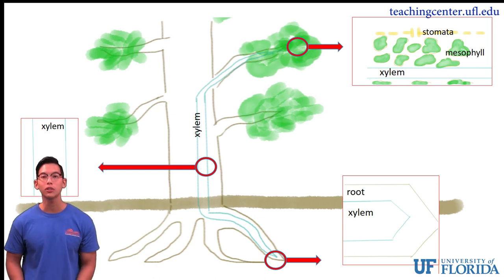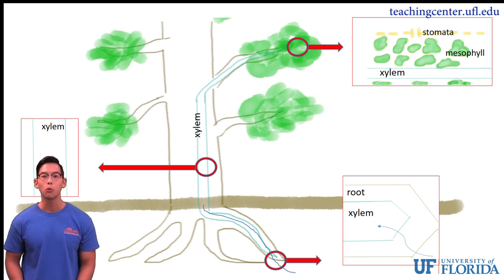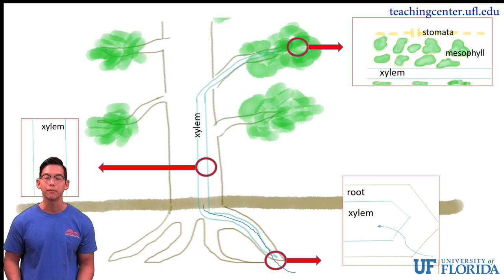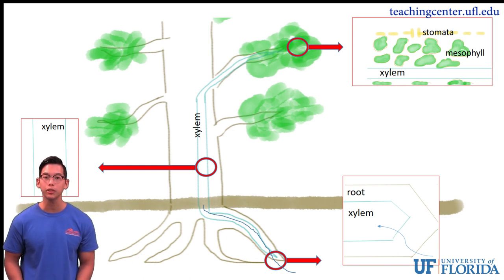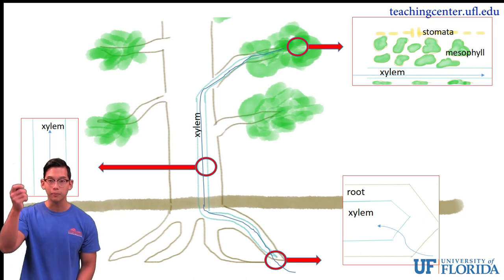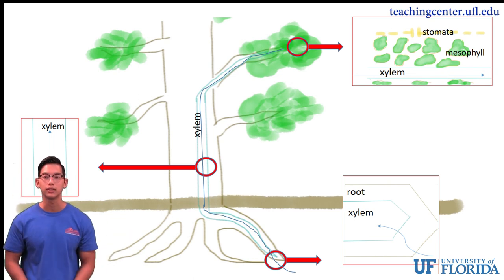First, water in the soil moves into the roots of the plants through osmosis, and then again through osmosis, water moves into the xylem of the roots. From there, adhesion and cohesion allow for capillary action of water to move up the xylem and towards the individual branches.